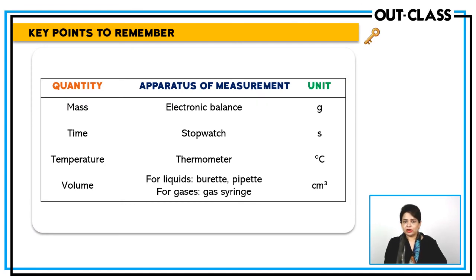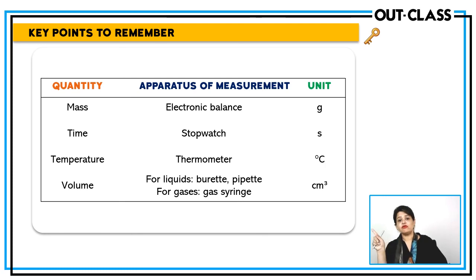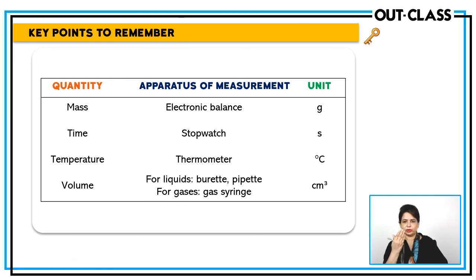To summarize: the unit for mass is grams and we use an electronic balance in chemistry to measure mass. For time, we use a stopwatch and measure in seconds. For temperature, we use a thermometer and measure in degree Celsius. For liquid volume, burettes and pipettes are the most accurate; volumetric flasks are used to make solutions. For gases, we use a gas syringe. Volume is generally measured in cm³ in chemistry, but in calculations you sometimes convert to dm³.